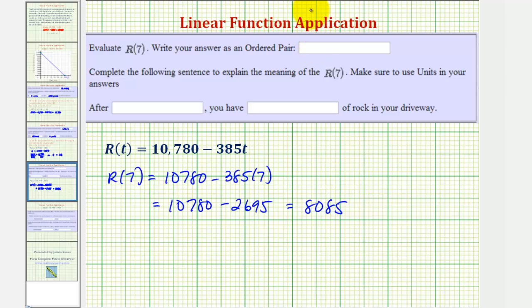So as an ordered pair, the input variable, or t, is equal to 7, and the function value, or the output, is 8,085, which means after seven hours you have 8,085 pounds of rock in your driveway.